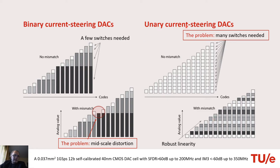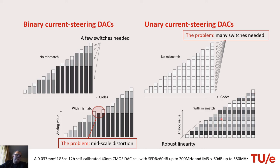The other extreme is the unary DAC architecture. In this architecture we use the same references for all cells that are being switched, which results in the problem that many resources are used — many switches, many synchronization latches, many drivers. However, the performance is very robust: even if you have mismatches, they remain only local mismatches, so generally the performance is much more linear. You don't have this severe third-order distortion pattern.